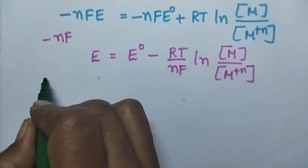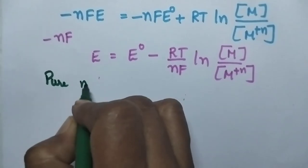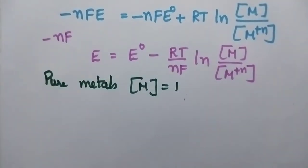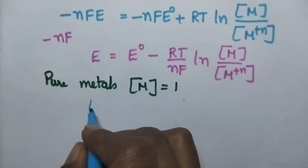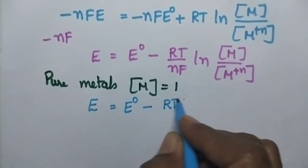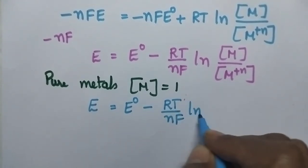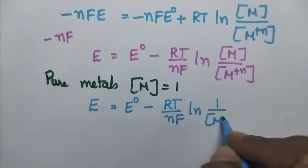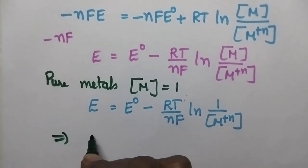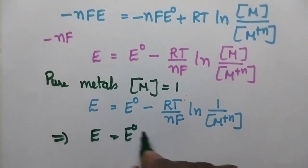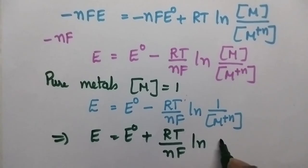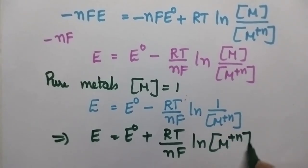In case of pure metals, the concentration of metal is equal to 1. Then the above equation can be written as E = E° − RT/NF × ln(1 / concentration of metal ions). It can also be written as E = E° + RT/NF × ln(concentration of metal ions).